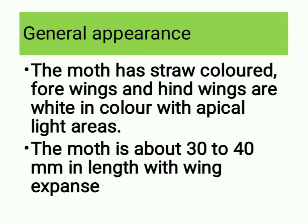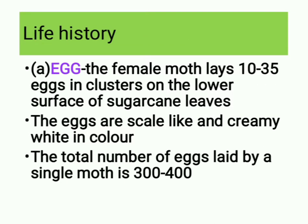General appearance: the moth has straw-colored forewings and hind wings are white in color with apical light markings. The moth is about 30 to 40 millimeters in length with wing expanse. Life history — egg: the female moth lays 10 to 35 eggs in clusters on the lower surface of sugarcane leaves. The eggs are skin-like and creamy white in color.